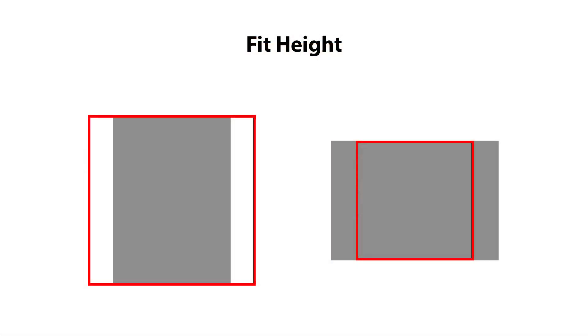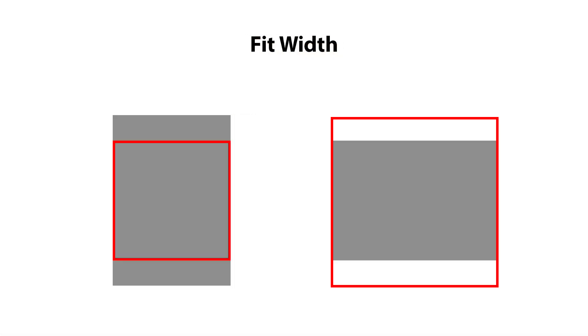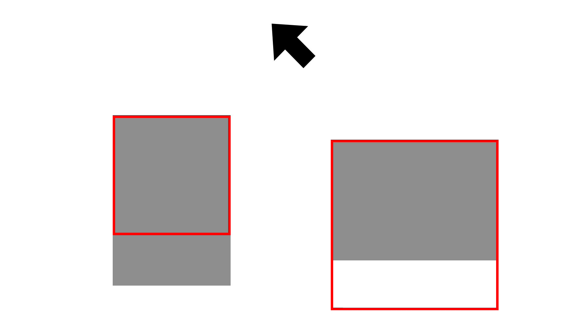Fit Height scales the overlay to the height of your image, regardless of its format. Fit Width adjusts the overlay to the width of the image. You can align the overlay with the respective image edge using the arrow keys. Of course, you can only see changes if the effect does not already touch the image edge due to the adjustment mode.